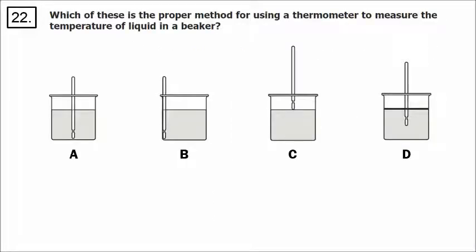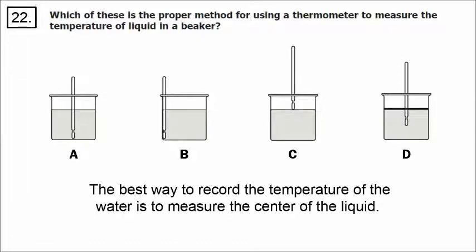In number 22, when measuring temperature — especially if there's a hot plate underneath the beaker — you don't want to put the thermometer all the way on the bottom because you might be touching the hot plate. In choice C, the thermometer isn't even in the liquid. The best way to record the temperature of the water is to measure the center area of the liquid. The correct answer is choice D.